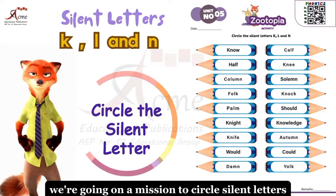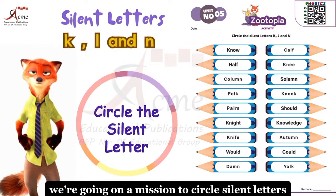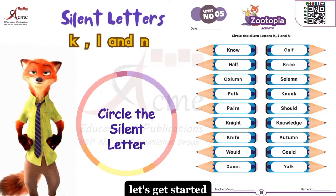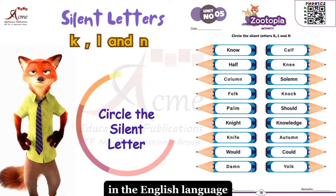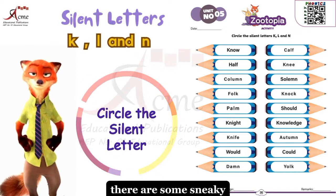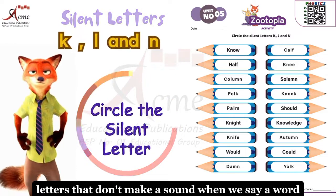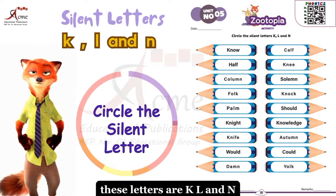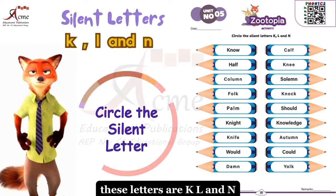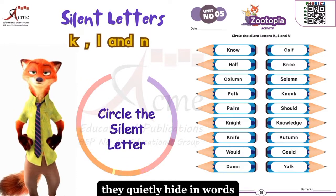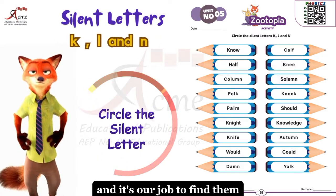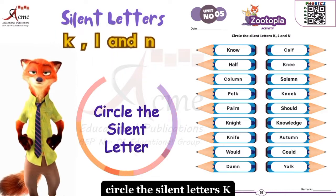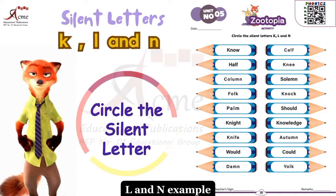We're going on a mission to circle silent letters. Are you ready for the challenge? Let's get started. In the English language there are some sneaky letters that don't make a sound when we say a word. These letters are K, L, and N. They quietly hide in words, and it's our job to find them and circle the silent letters K, L, and N.